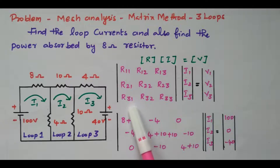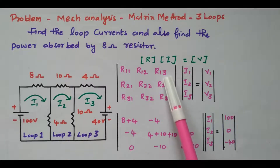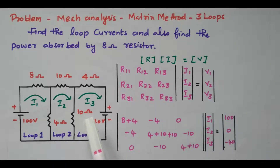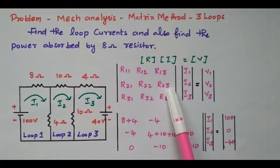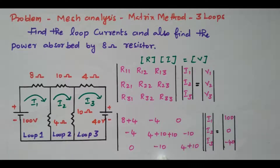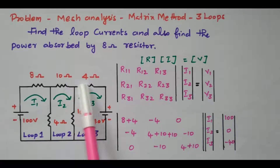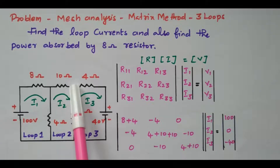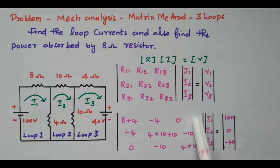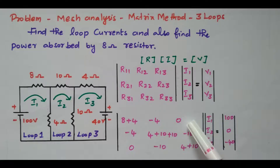R31 is similar to R13 — there is no common terminal between the third and first loops, so R31 = 0. R32 is similar to R23 — the resistance between the second and third loops is 10 ohms, so R32 = −10. R33 is the resistance available in the third loop: a 10-ohm and a 4-ohm, so R33 = 4 + 10 = 14. The resistance matrix is now framed — diagonals are positive, all other elements are negative.